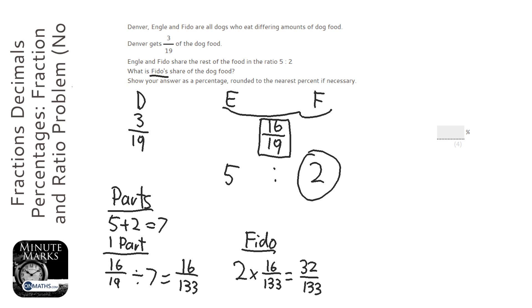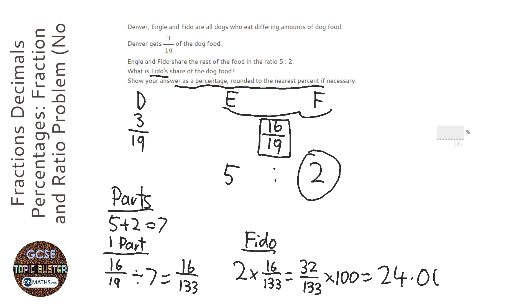Now, it does say, show your answer as a percentage rounded to the nearest percent. So to work between fractions and percentages, I just need to times by 100. So what I can do is just times that by 100, I'll do it on the calculator, times by 100, and press S to D if it comes up as a fraction, and it says 24.060... So to the nearest percent, Fido gets 24%.